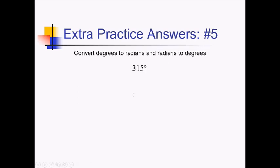On this one, we're trying to convert this into radians. I'll multiply by pi over 180 degrees. Now 315 and 180 are both reducible by 45 — that's the biggest number that goes into both of those. So 315 divided by 45 would be 7, and 45 goes 4 times into 180. So this is 7 pi over 4 radians.